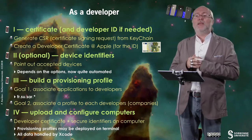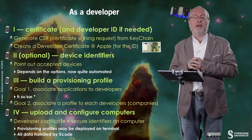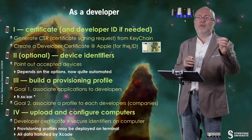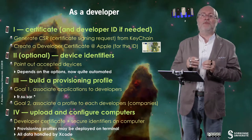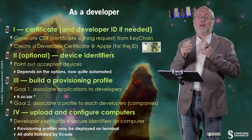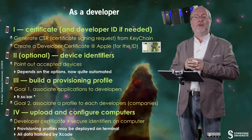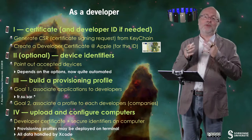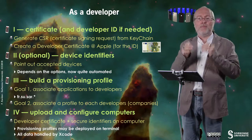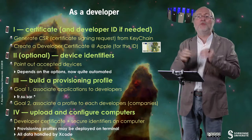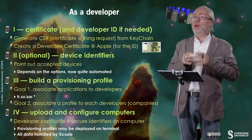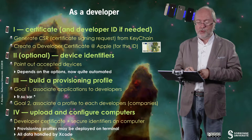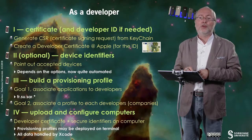The third step is to build a provisioning profile. The idea is to associate a given set of applications to a given set of developers. And you do that with a unique identifier. Usually you have a radix of such an identifier, and every application has its own identifier. For example, in our university, it's fr.su.sar.somethingelse.